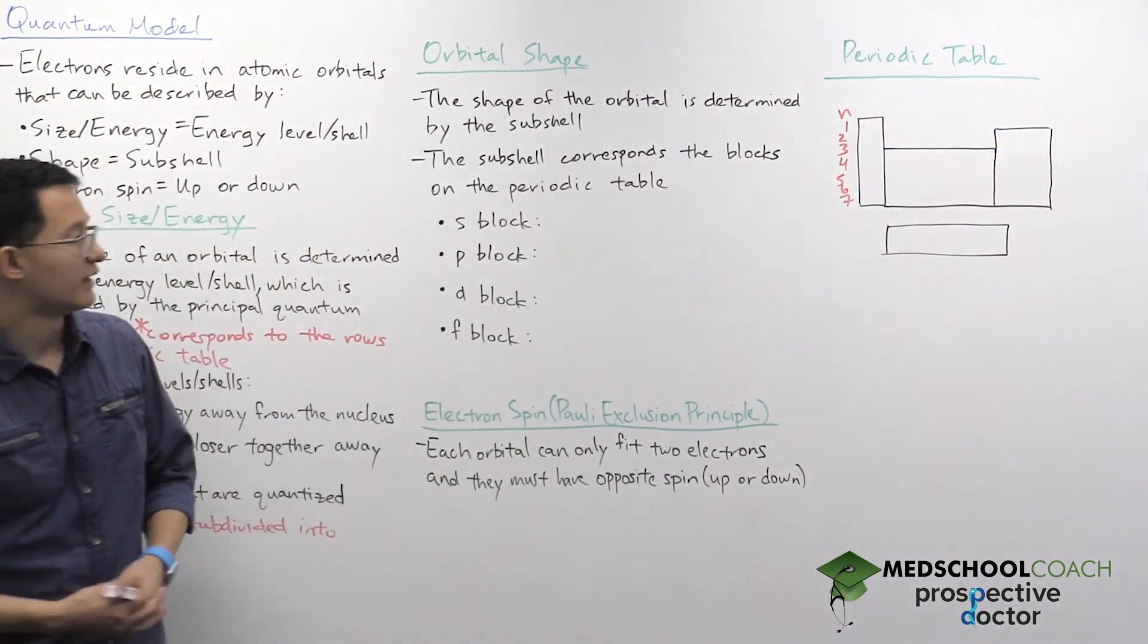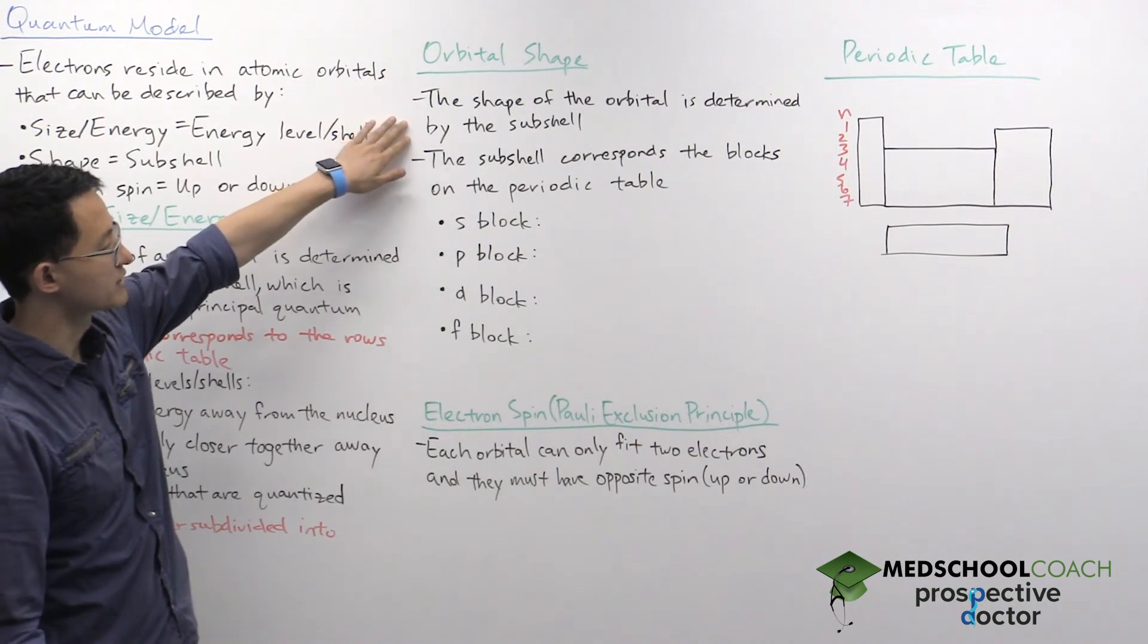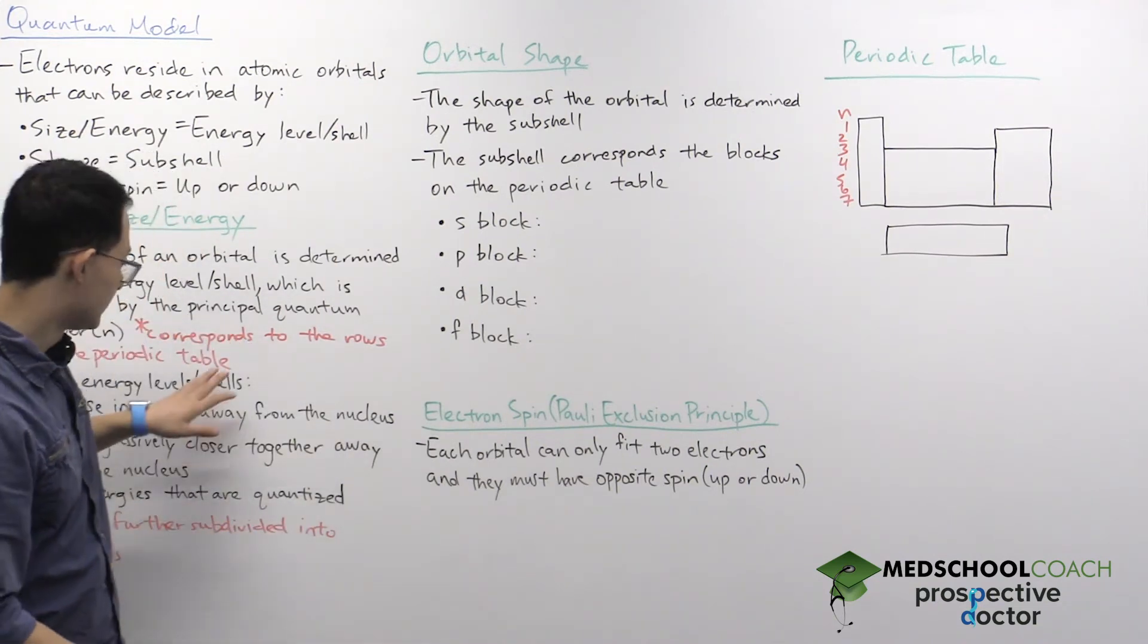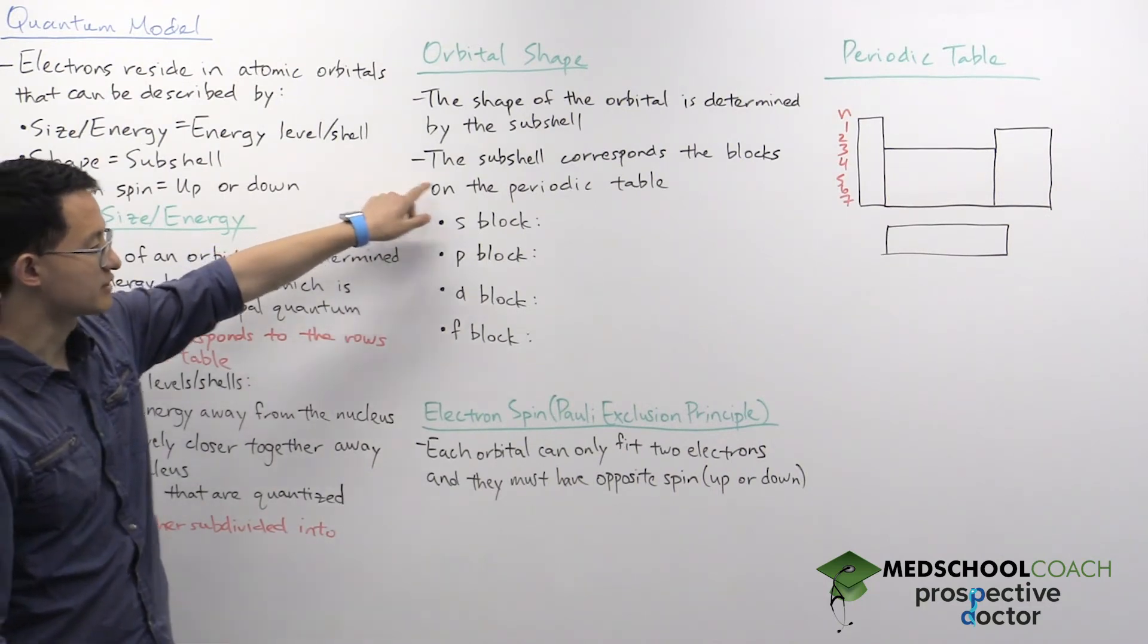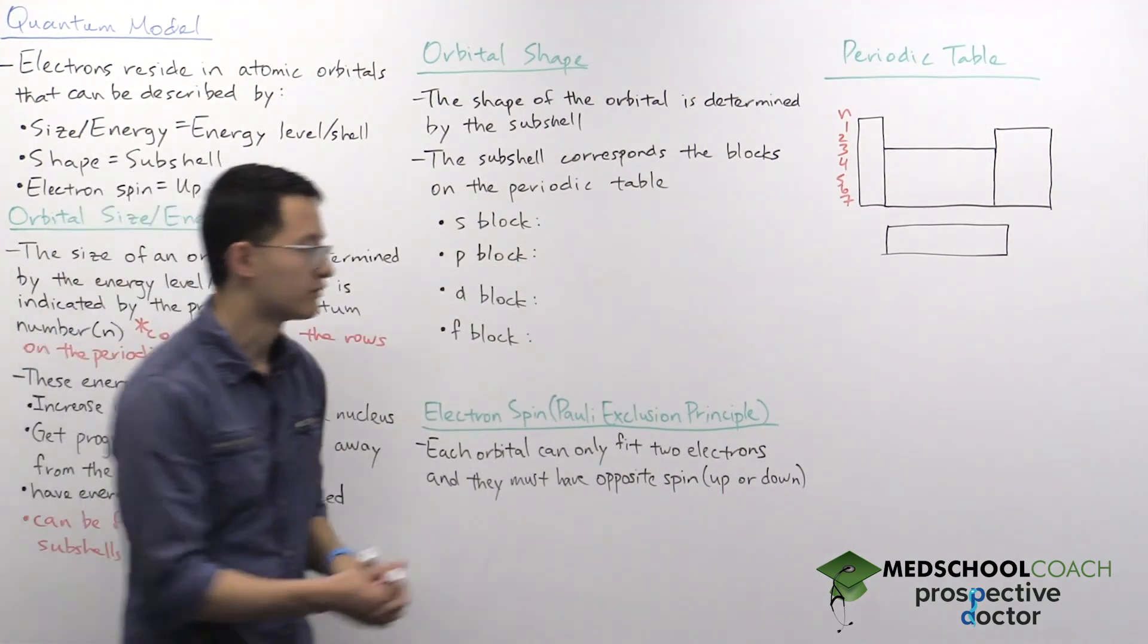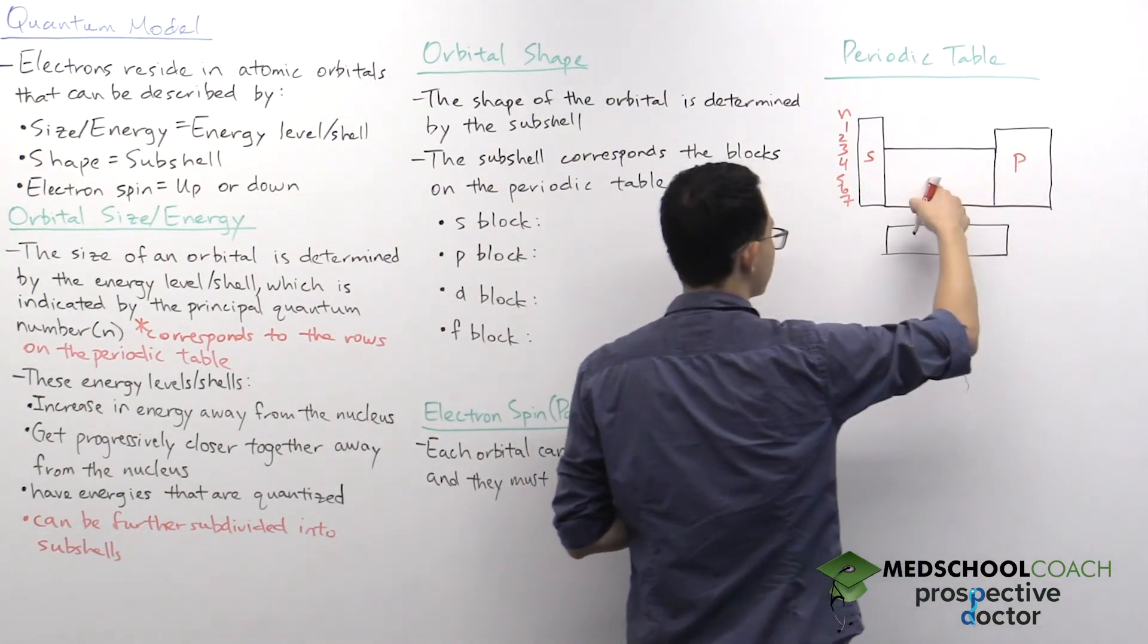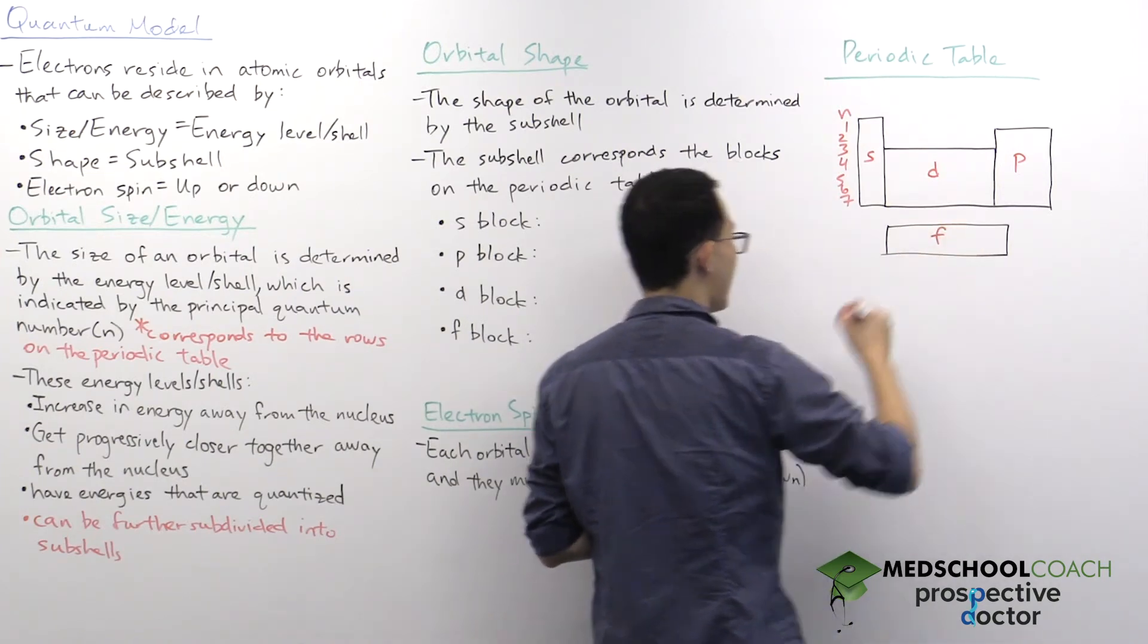Let's look at the subshell in more detail. What's important for orbitals is that the shape of the orbital is actually determined by the subshell. The subshell, similarly to the principal quantum number, does correspond to an aspect of the periodic table. Here the subshell represents the different blocks on the periodic table. You might recall these first two columns we call the S block, these last six columns we call the P block, our transition metals we call the D block, and our lanthanides and actinides we call the F block.